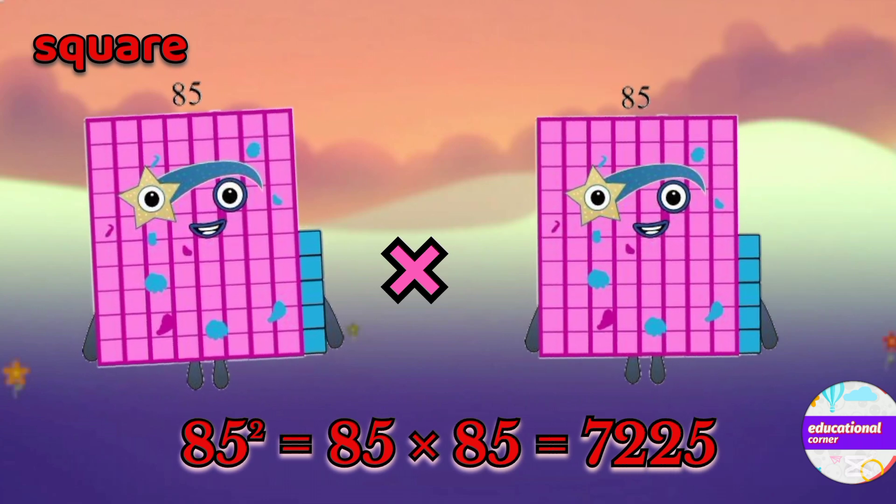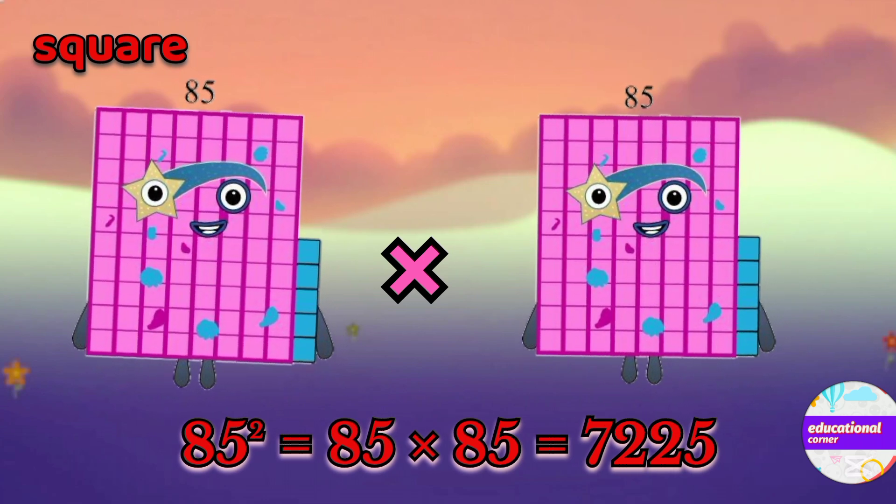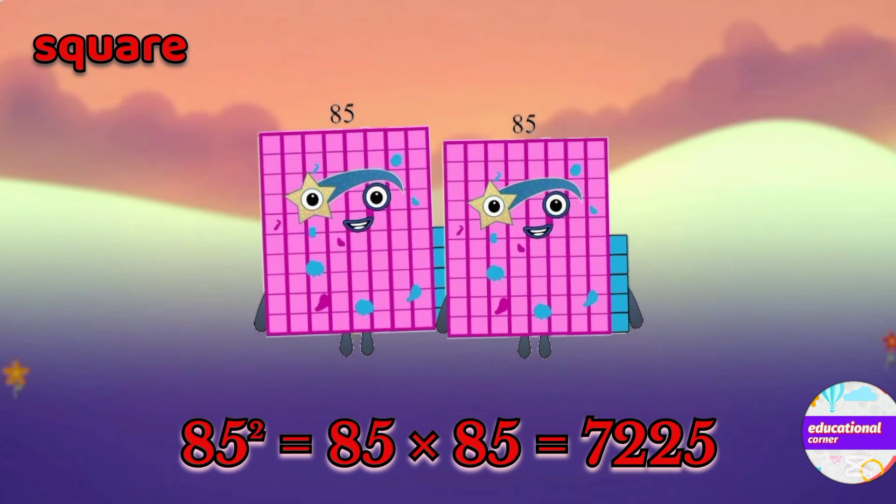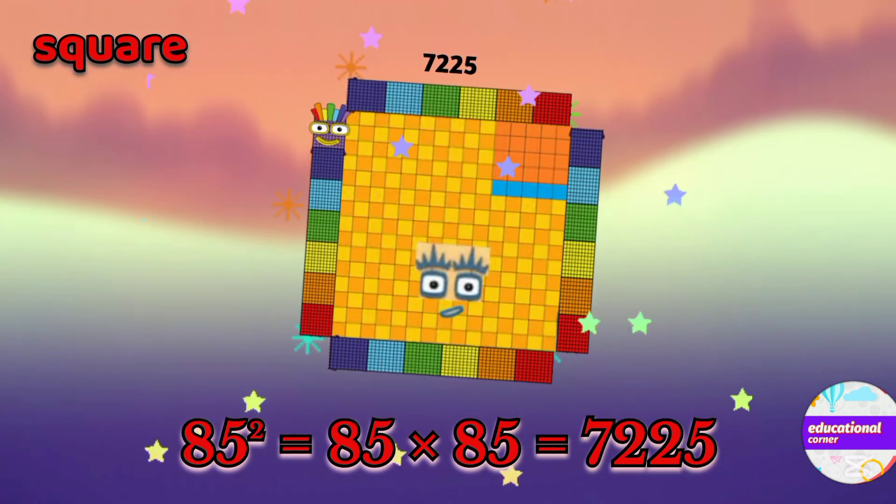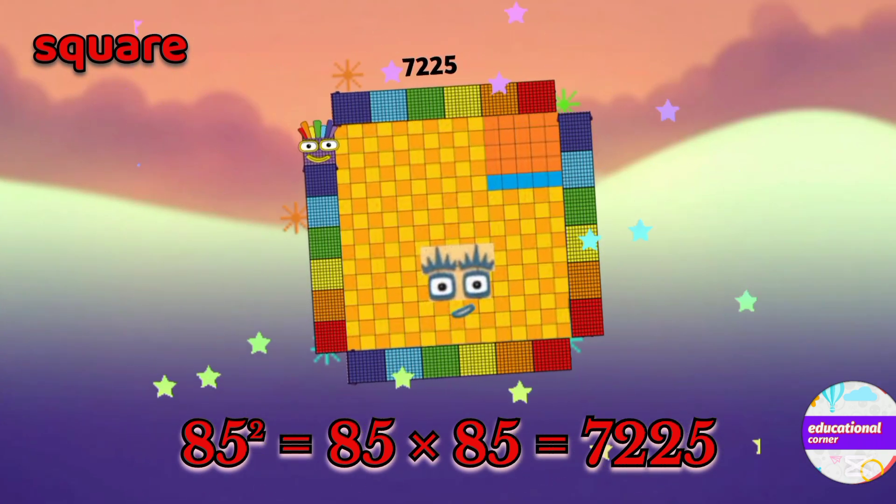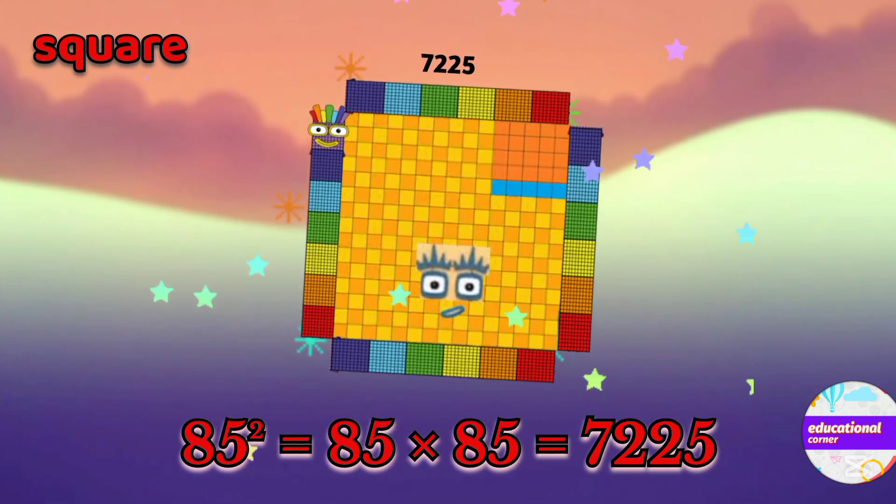85 multiply by 85. So the square of 85 is 7225.